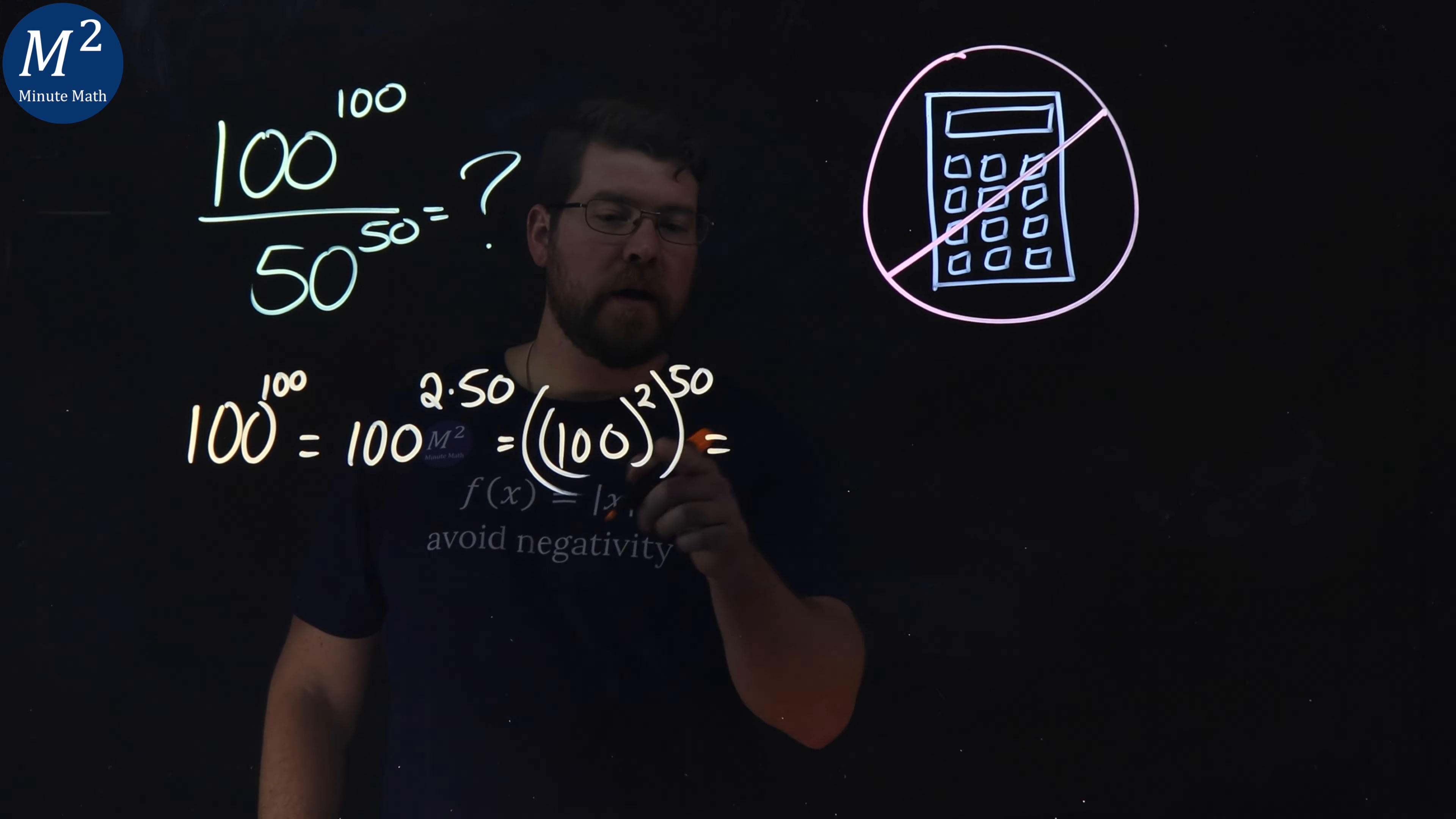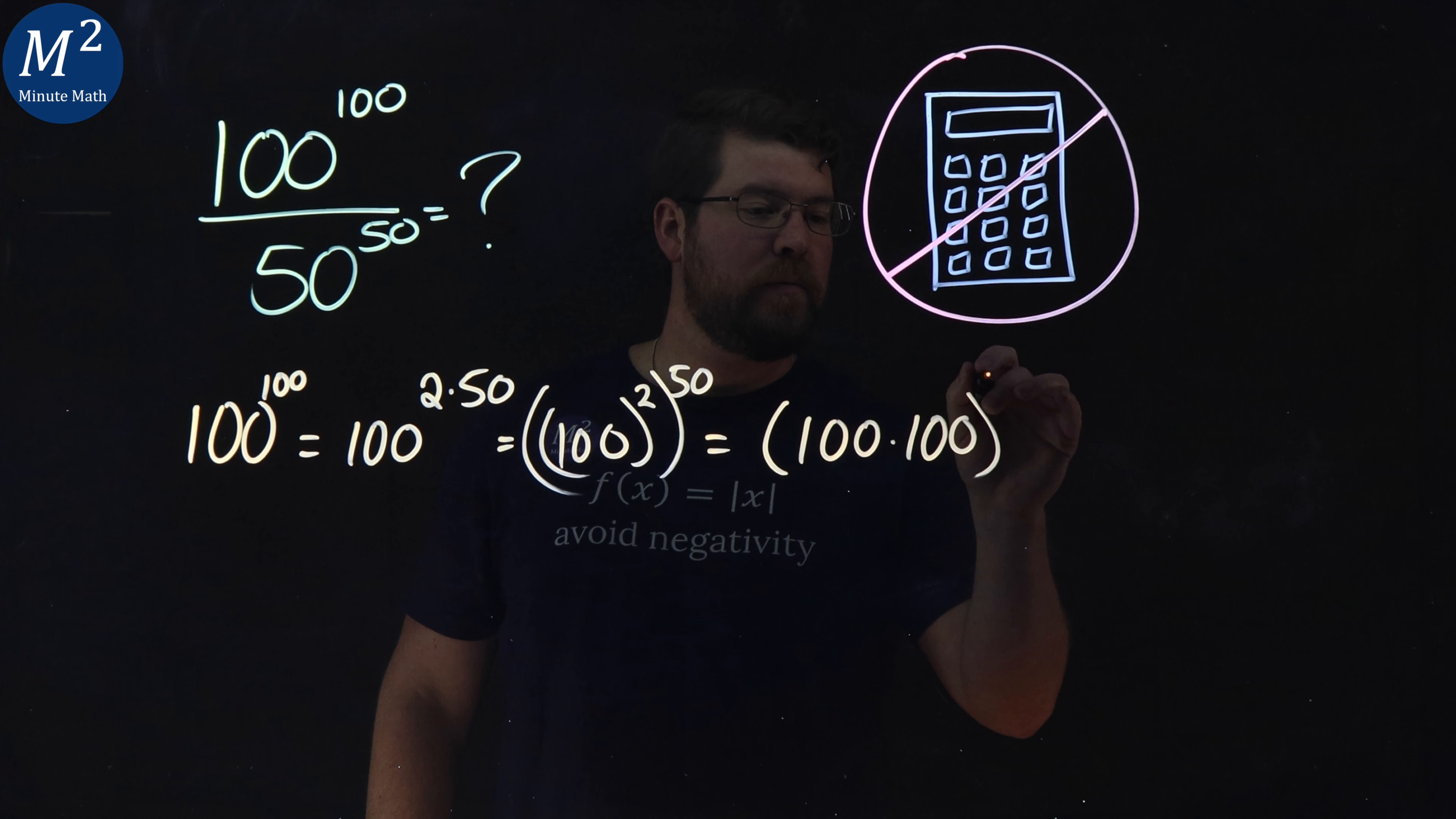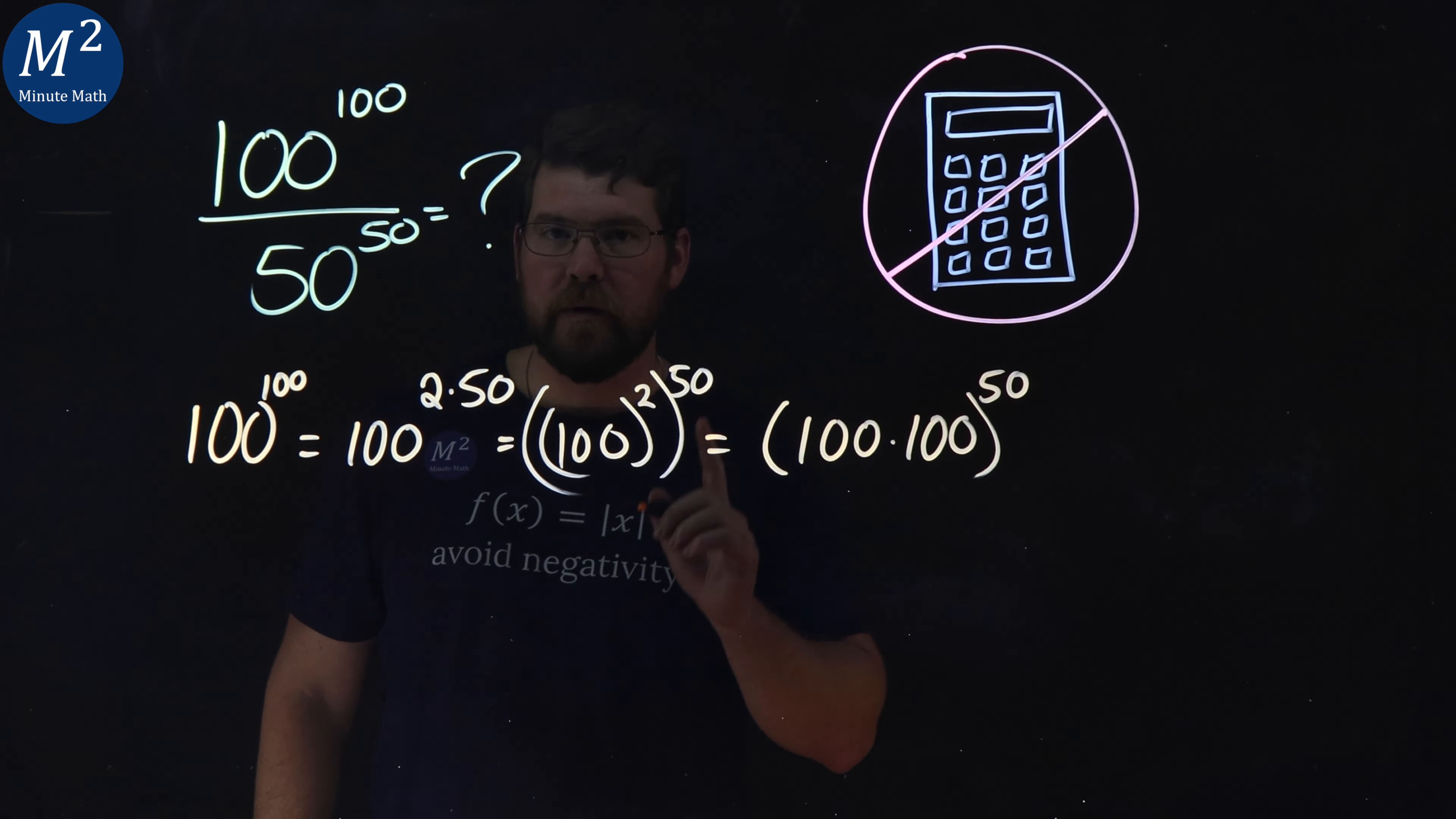From here, 100 squared is 100 times 100, to the 50th power as well.